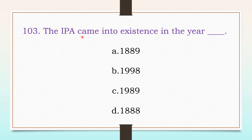The IPA came into existence in the year: 1889, 1998, 1989, or 1888. The answer is A, 1889.